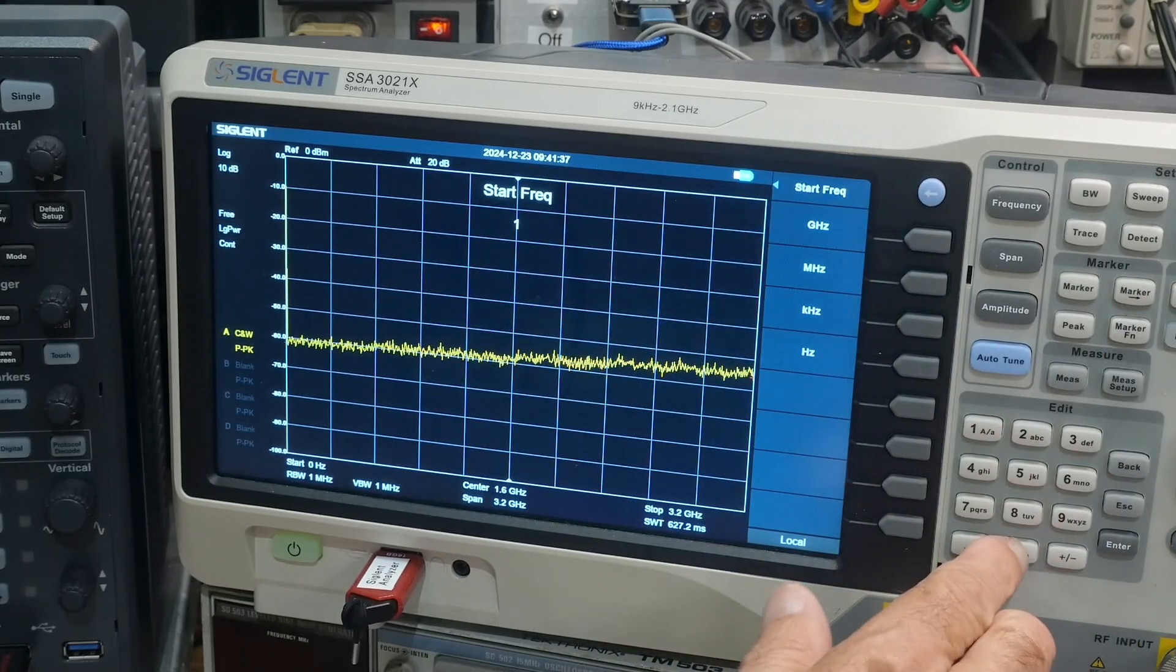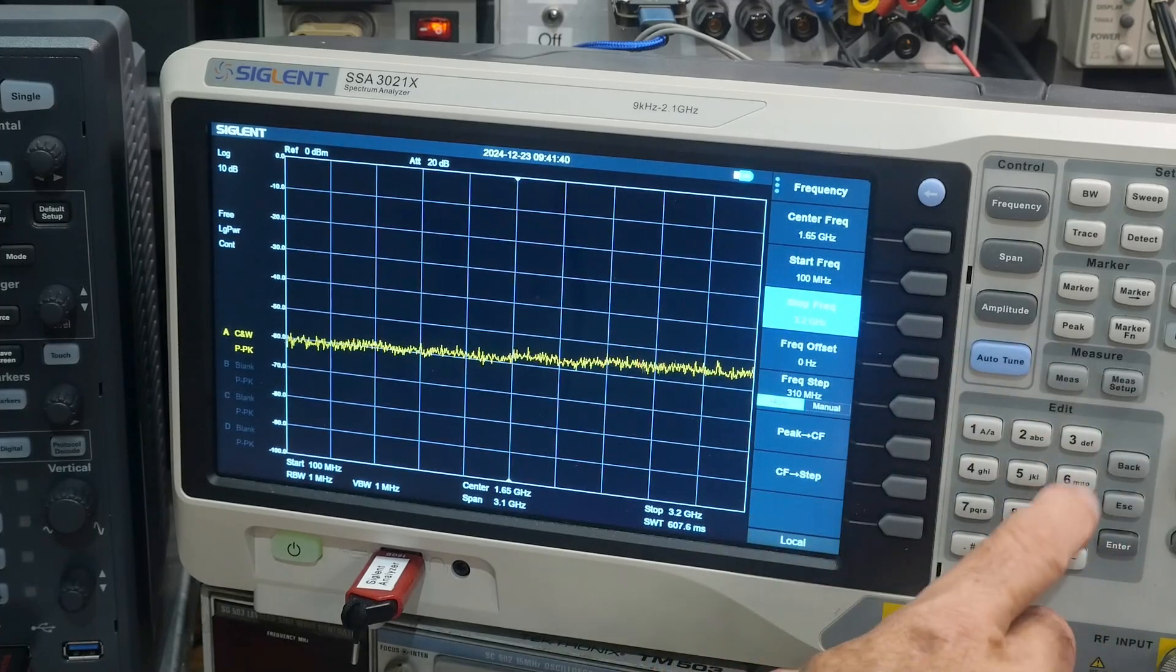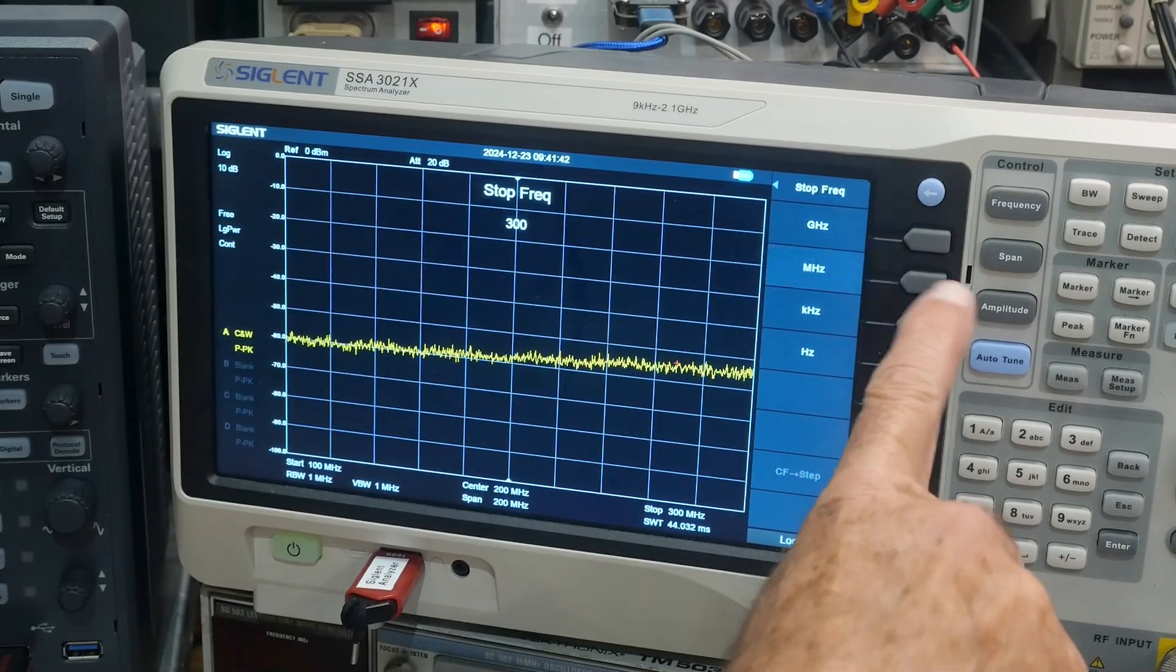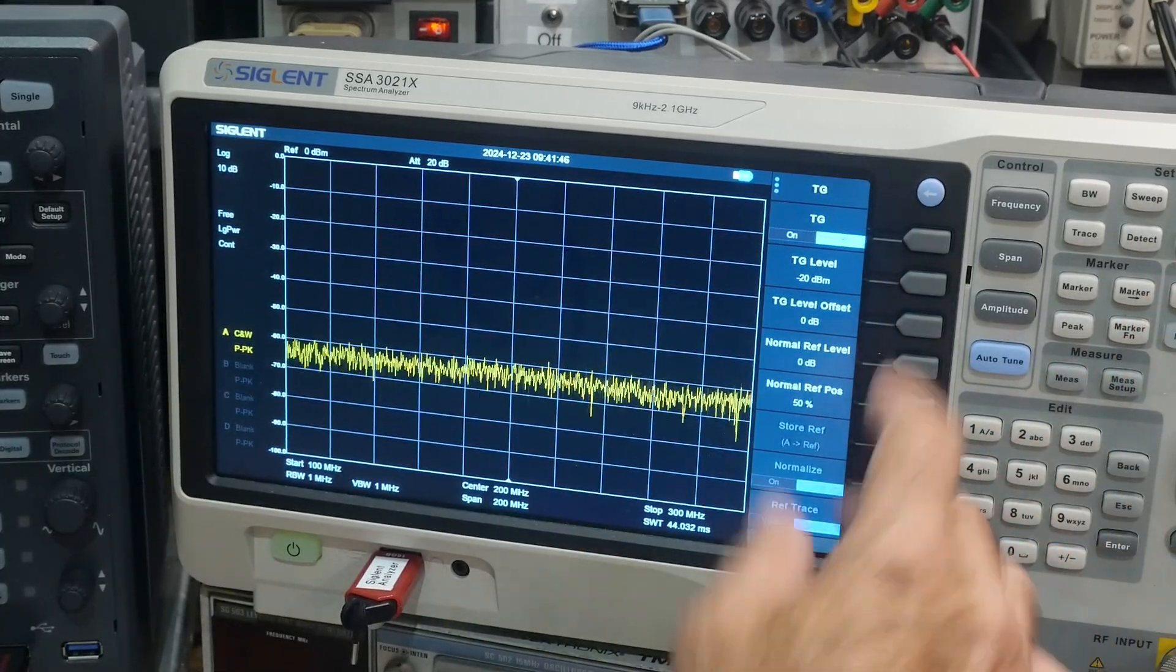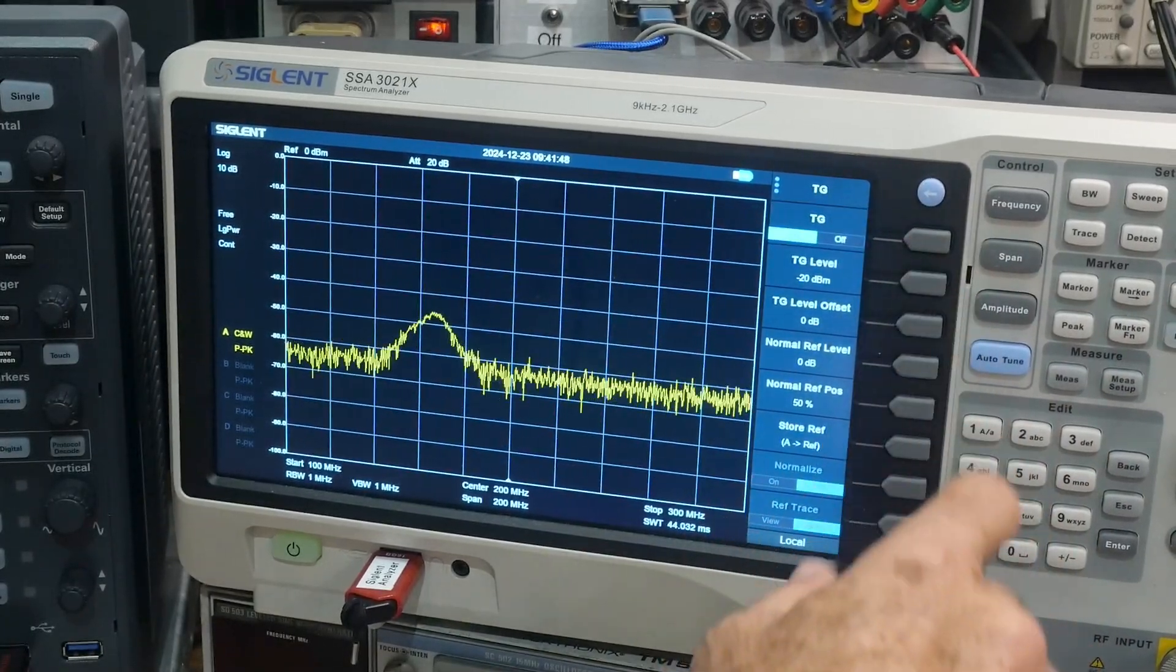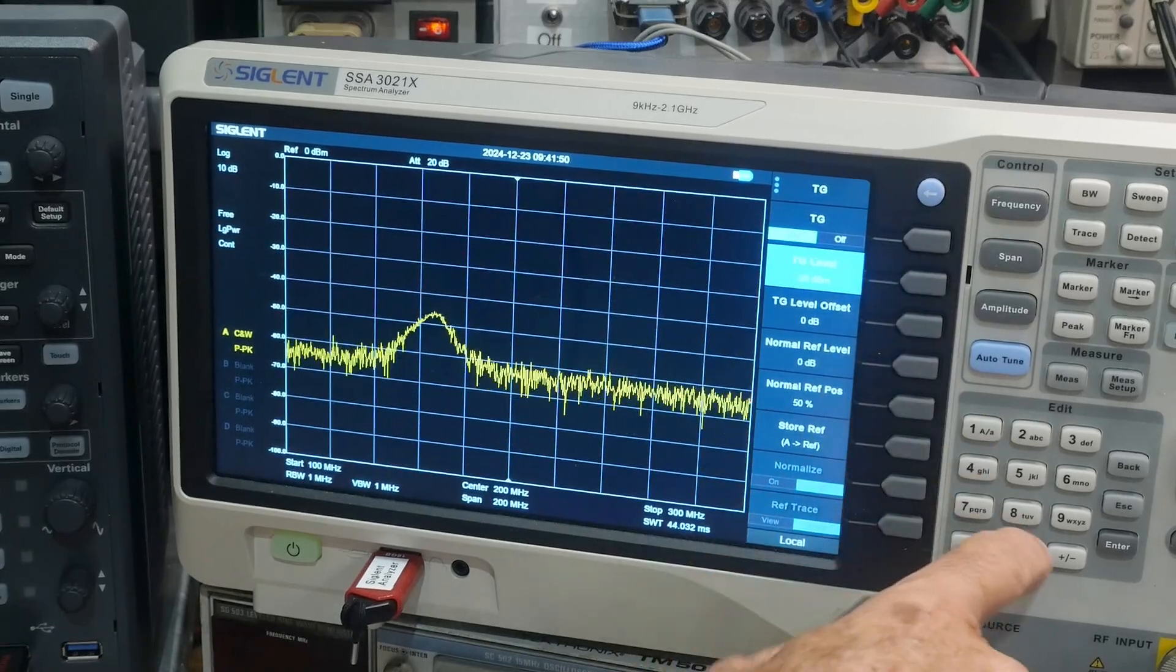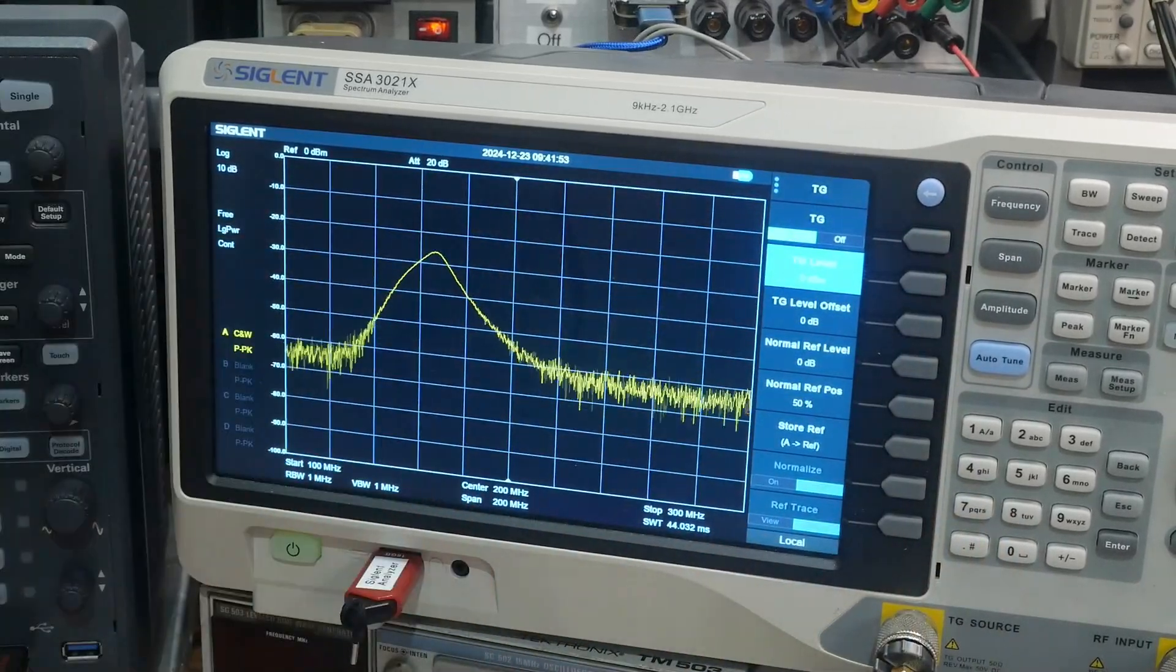Stop frequency we'll say 300 megahertz, and we will turn the tracking generator on. Let's increase the level here to zero dBm. There we go, now we can see it really, really good.